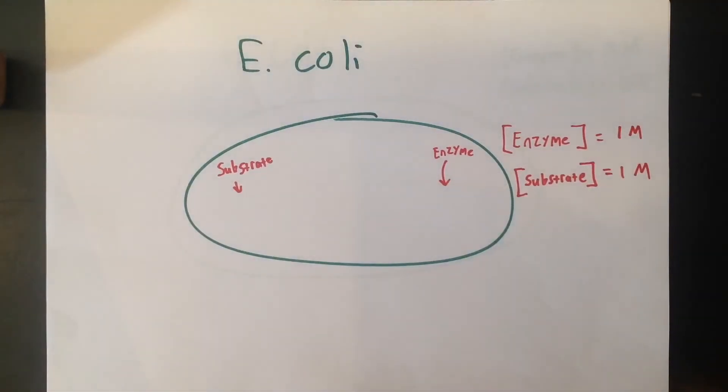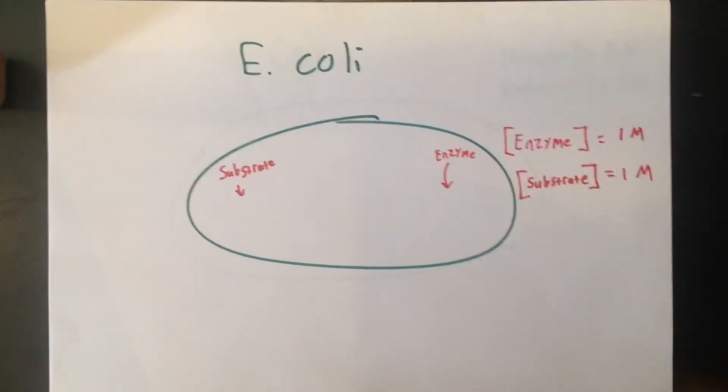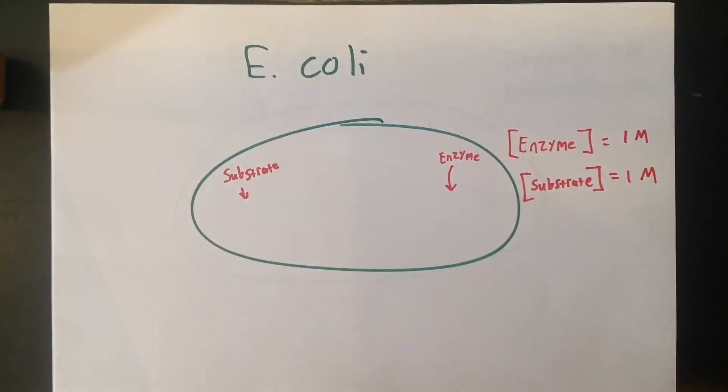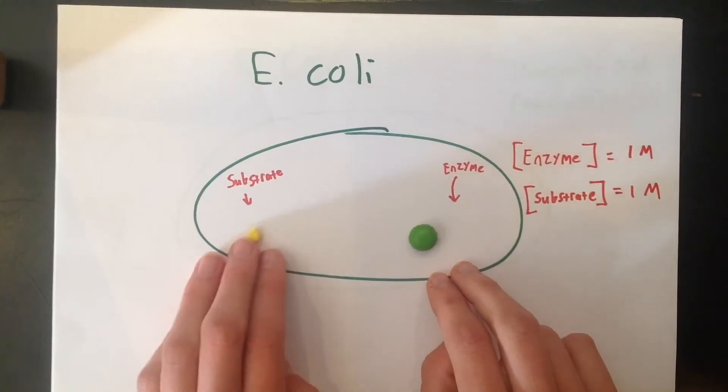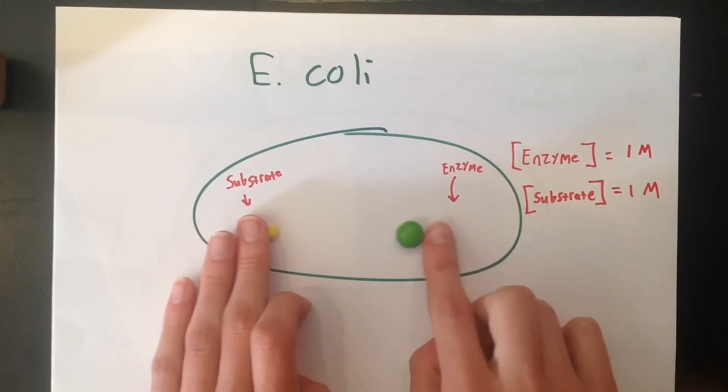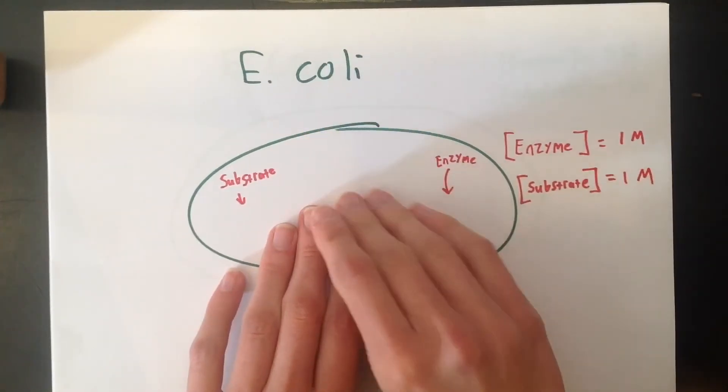If we remove the cellular contents and we're just examining enzyme and substrate, we have a one-to-one molar ratio. Then our enzyme and substrate will find each other, interact, and the reaction will proceed.